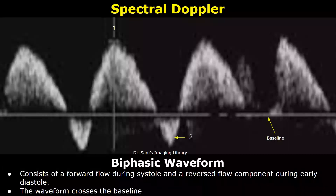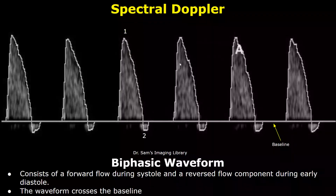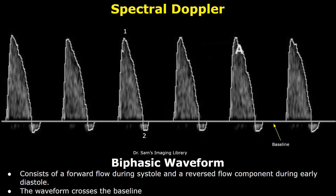In this waveform we see two components: one is of forward flow and the other component is reverse flow during early diastole. Two prominent components are seen, so it is a biphasic waveform. The waveform has crossed the baseline. Here is another biphasic waveform — we have a large forward component and a small reverse flow component, so two components are present, therefore it is a biphasic waveform.